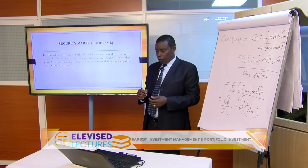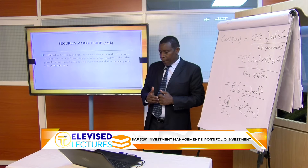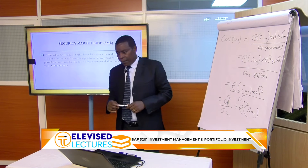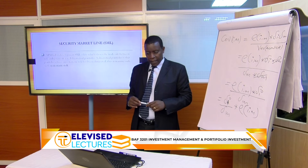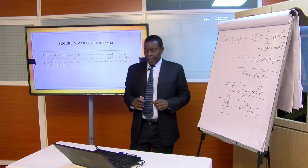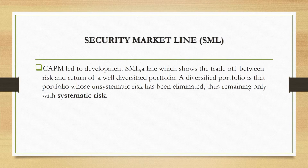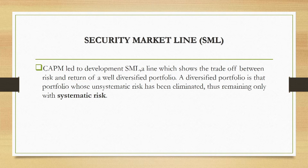Having tackled that, we go to what we normally call the Security Market Line. Do remember in the portfolio theory we had the Capital Market Line. But now we are talking about the Security Market Line, which is somewhat similar. The CAPM led to the development of SML. The SML is a line which shows the relationship or trade-off between risk and return of a well-diversified portfolio — a portfolio whereby the unsystematic risk has totally been eliminated, leaving only systematic risk.